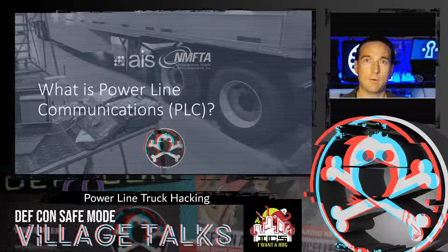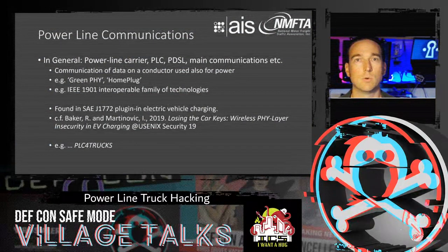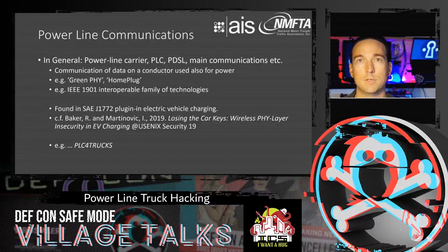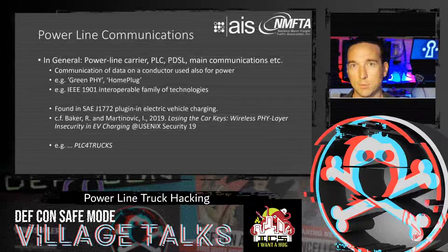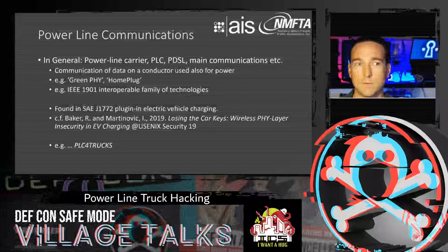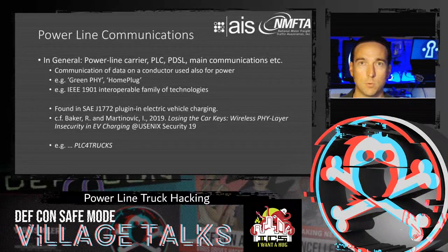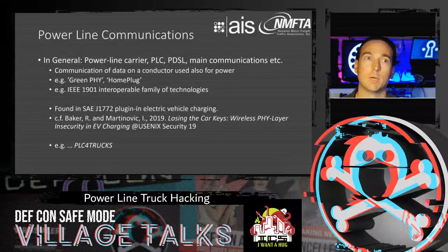What is power line communications? Generally speaking, any time you're putting data onto lines that are intended for power, you're doing power line communications. Technologies in this class include GreenFi, HomePlug, and the interoperable IEEE 1901 family. In automotive, it's most commonly found under SAE J1772 for plug-in electric vehicle charging. There was interesting work by Baker and Mertinovic using X10, showing they could remotely read traffic between an EV's plug-in connection and the charger. But today we're talking about trucks.